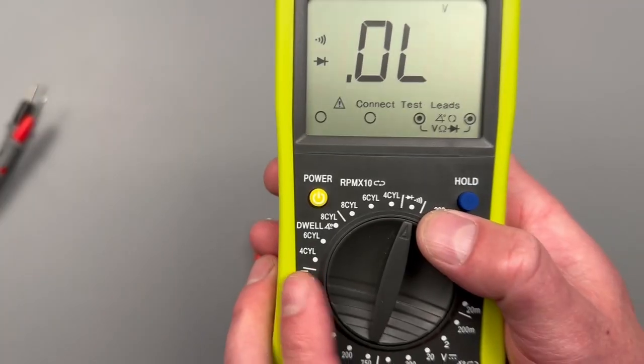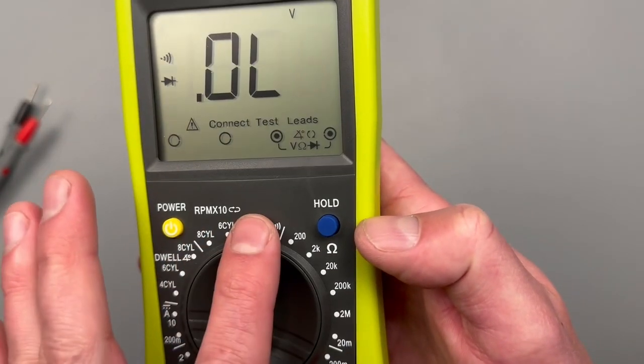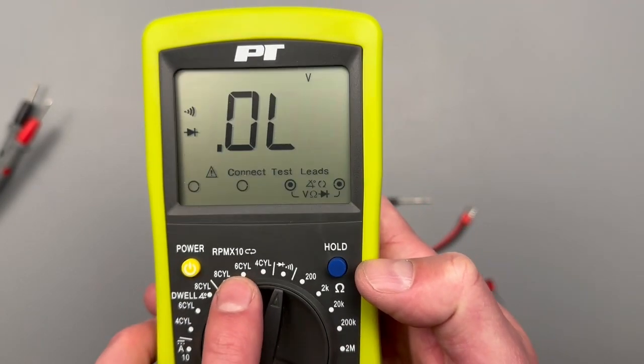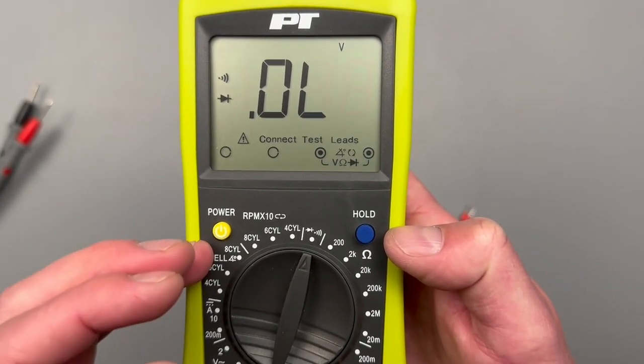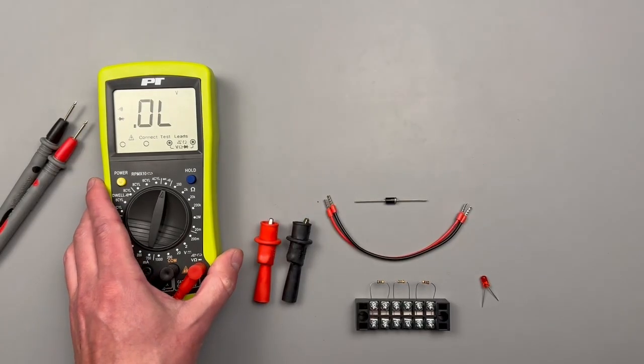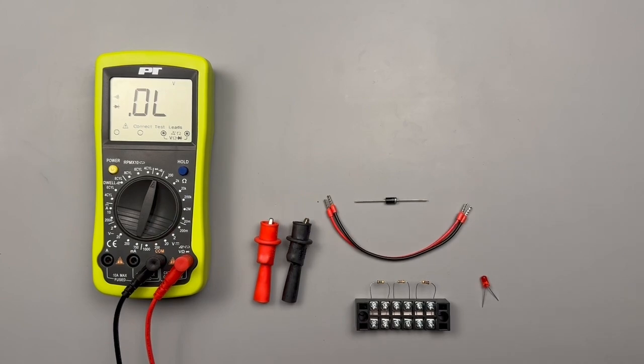We're going to be starting at the diode continuity setting and working our way clockwise through the wheel. I'm sure a lot of you have questions about this dwell and RPM. We're going to go into that at the end of the video and I have some visual aids to kind of help walk you through what those measurements are for. But let's go ahead and start out with our diode and continuity.